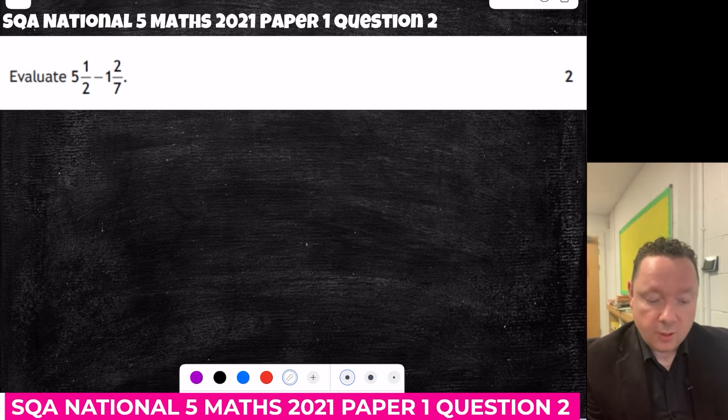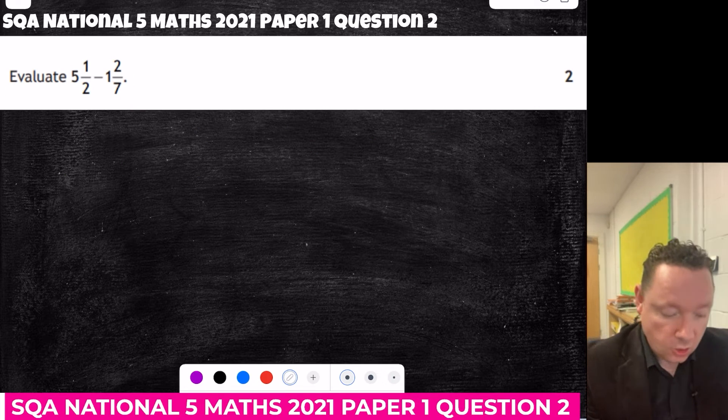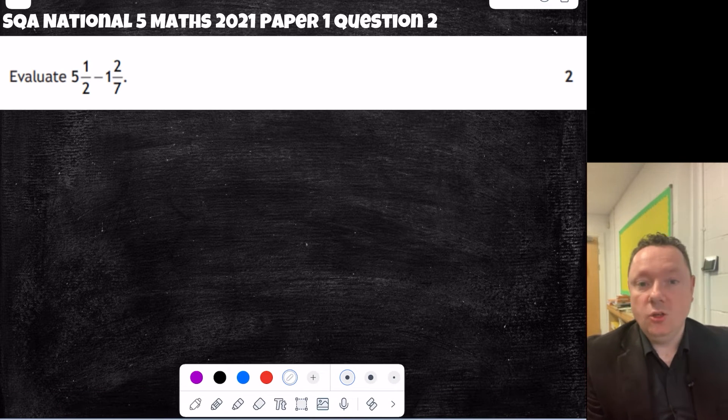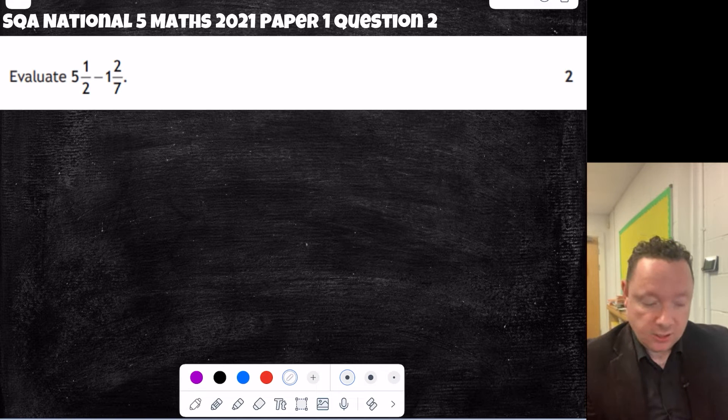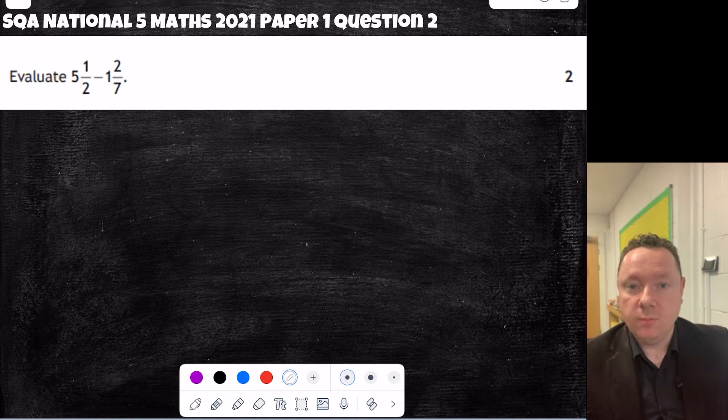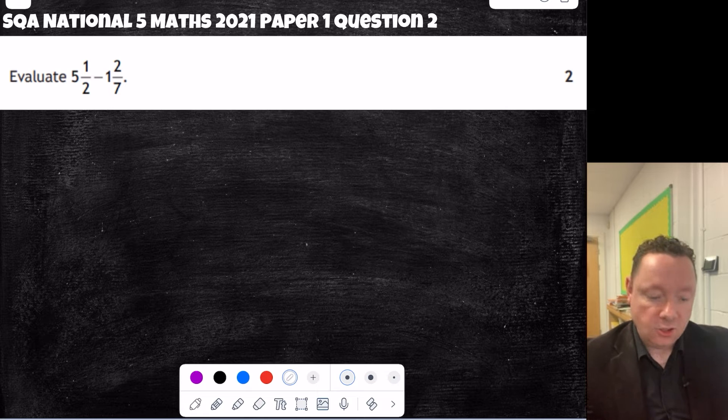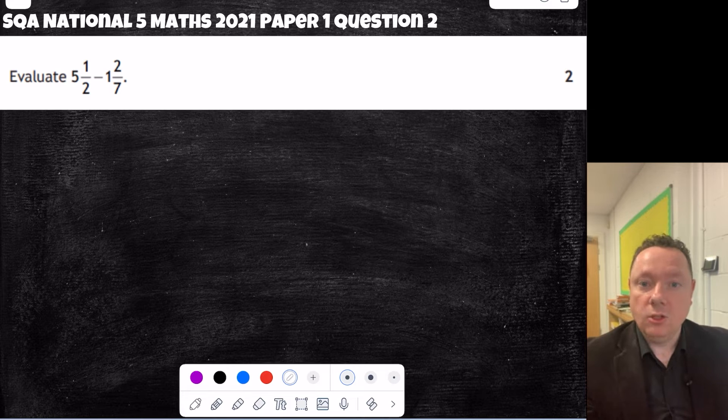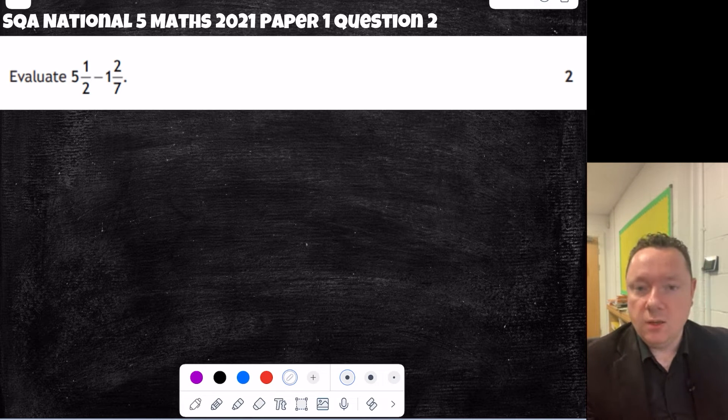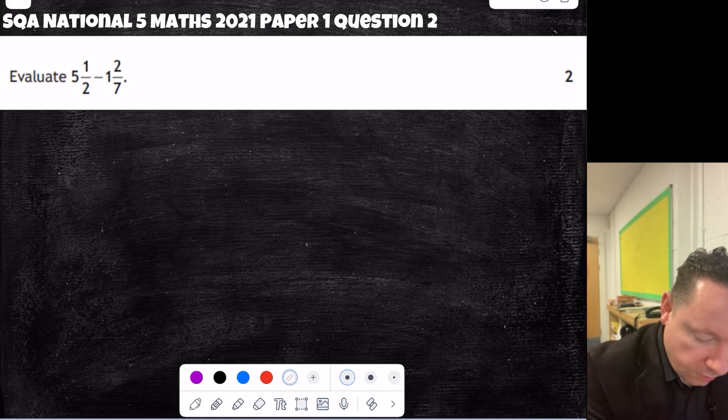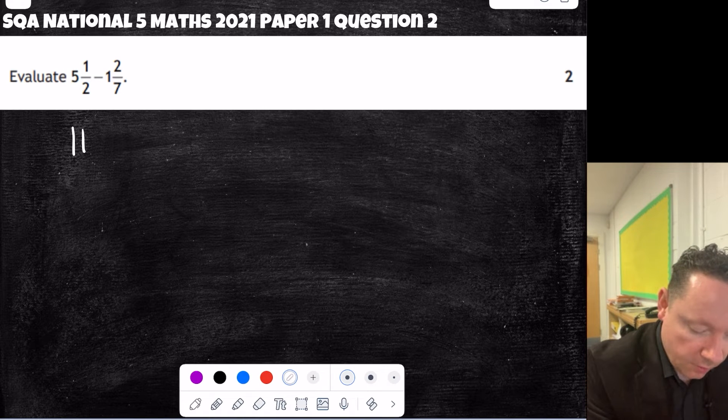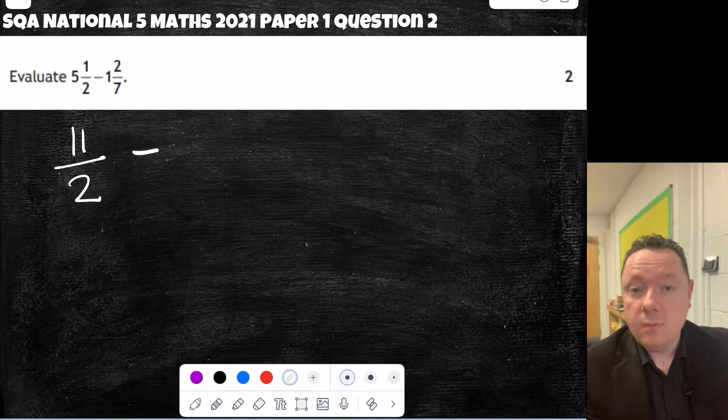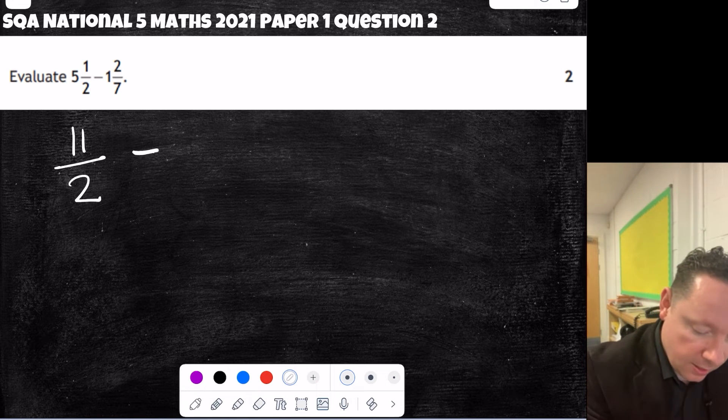Okay, fractions, SQA National 5 Maths 2021, paper 1, question 2. Evaluate 5 and a half minus 1 and 2 sevenths. There's two ways to do this, actually. With mixed numbers, if it's add and subtract, you can take away the whole number parts and then the fraction parts. Or you might find it easier just to convert them all to improper fractions and do the same thing if I add, subtract, times, and divide. That's what I'm going to do. Stick with the easiest way for me. So change to improper fractions. So I do 5 times 2 is 10 plus 1 is 11. So I get 11 over 2. Minus, and then it's 1 times 7 is 7 plus 2 is 9, 9 over 7.